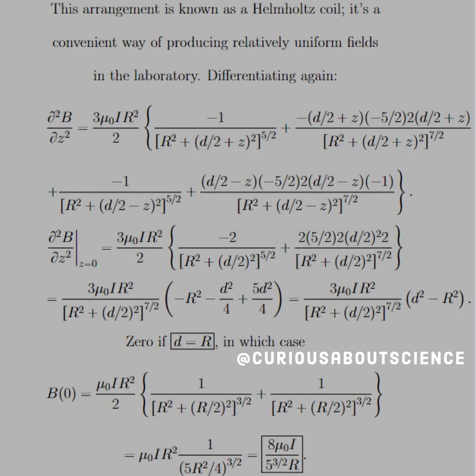After plugging in zero, we see that we get something that's equal to 3 mu naught I R squared divided by [R squared plus (d/2) squared] to the 7/2 power. But the important part is that we're left with a (d squared minus R squared). So this is only equal to zero if d equals R, where R is the radius of the loop itself.